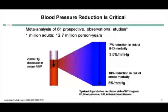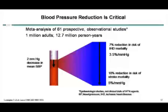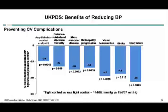Coming to blood pressure — blood pressure reduction is critical. A 7% reduction in risk of ischemic heart disease is achieved by just a 3.5 mmHg reduction in systolic pressure, and a 10% reduction of diastolic. The cardiovascular mortality risk doubles with each 20/10 mmHg increment in blood pressure. The UKPDS again shows the benefits of reduction of blood pressure.